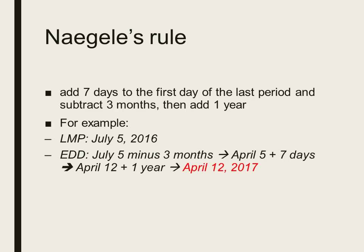This is Naegele's rule. We add 7 days to the first day of the last menstrual period, subtract 3 months, then add 1 year. For example, if the patient's LMP is July 5, 2016: July 5 minus 3 months is April 5, plus 7 days is April 12, plus 1 year is April 12, 2017 as the estimated date of delivery.